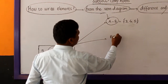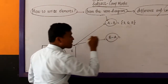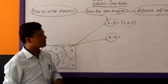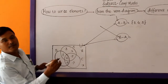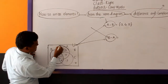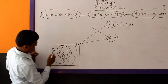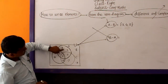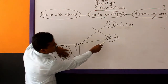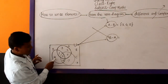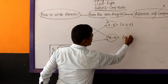Similarly, B difference A. B difference A means elements of B only, not of A. Elements of A are 1, 2, 3, 4, 5 — these cannot be written. Accept these elements; the remaining elements of set B are 6 and 10. So B difference A is 6 and 10.